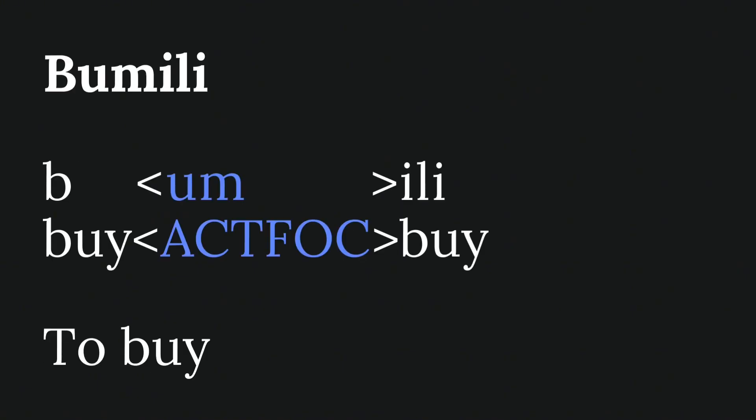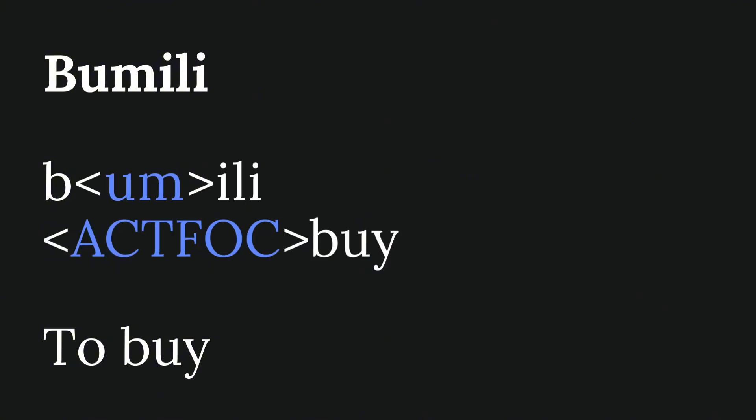Angle brackets have two uses. The first is to indicate infixes — a type of affix that goes inside the word instead of at the front like a prefix or at the end like a suffix. In Tagalog, the actor-focus infix is 'um,' such that bili becomes bumili. When we gloss this, you write the root with angle brackets around the infix marking actor-focus, though you can leave out one of the repeated root segments if you want.